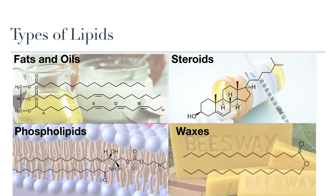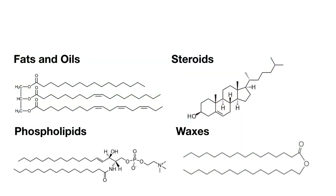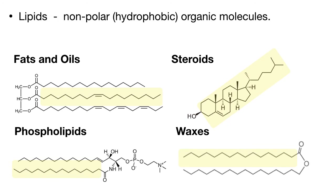Let's remember what you learned about polarity and apply it to the chemical structure of lipids. Most lipids have long hydrocarbon chains called fatty acids, or hydrocarbon rings, as part of their structure. These long chains or rings of just carbons bonded to hydrogen are non-polar.